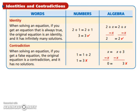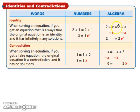An identity: when solving an equation, if you get an equation that is always true, the original equation is an identity and it has infinitely many solutions. Basically, when you're solving an equation, if you end up with something like 2 plus x equals 2 plus x, it does not matter what value x is — x could be 40, negative 17, or 33 halves. The equation will remain equal. That's when you have an identity.